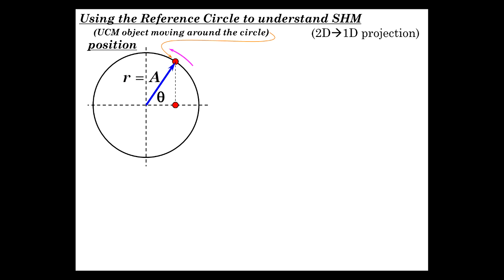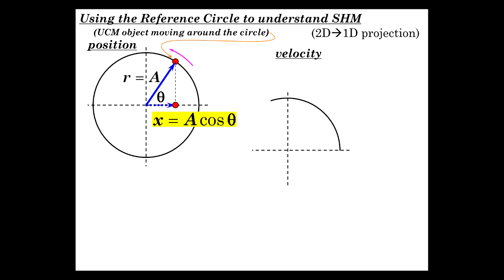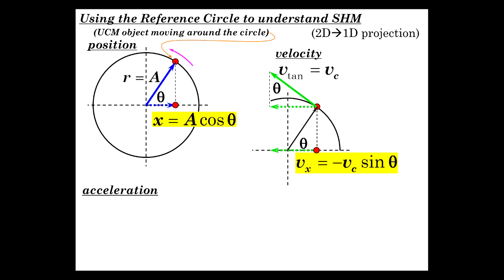The projection of the object onto the x-axis is A·cosθ, so position x equals A·cosθ. For velocity, in uniform circular motion the speed is constant — the circular or tangential velocity VC. Not all of this tangential velocity projects along the x-axis. The x-component of velocity is minus VC·sinθ — negative because it's directed opposite to the displacement. In circular motion, VC equals ωR, so this becomes minus ωR·sinθ.